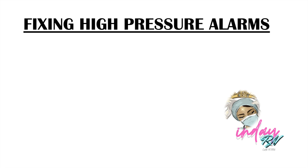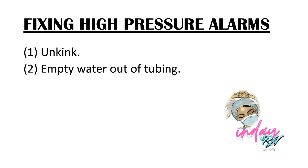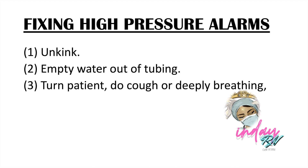Step-by-step for fixing high pressure alarms: first, check for the obstruction cause — if there is kinking, unkink the tube; if there is water in the tubing, remove it. Turn the patient and do coughing and deep breathing if the patient is following commands before suctioning. Suctioning is the last resort. Always check the patient's vital signs, especially oxygen saturation.